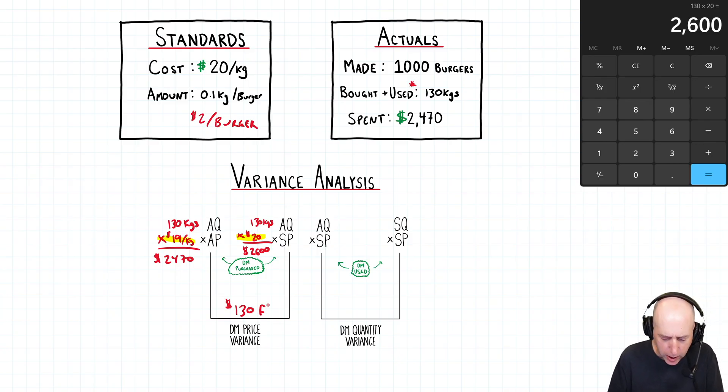Let's move over to the quantity variance. So, AQ SP. Now, as I said, often, material used will be different from material purchased. He could have some beef left over. But in this case, he purchased and used 130 kilograms. So, AQ, still 130 kilograms. SP, still 20 bucks. And yes, this prong is still 2,600. Often, in future questions, it'll be a different number. Like, these two numbers don't have to match. Because, of course, the amount purchased can be different from the amount used. SQ, SP. Well, okay. SP, still twenty dollars per kilogram.